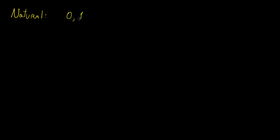When we're counting things, such as the number of puppies that you want to have, or the number of candy that you want to eat, we normally use what we call the natural numbers. These encompass everything from 0, 1, 2, and so on, all the way to infinity. This is the set of numbers we call the natural numbers, and normally we denote this by a letter that looks like an N, but the diagonal line is a little bit thicker than the rest. This is normally the mathematical notation you would see for the natural numbers.